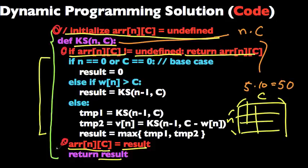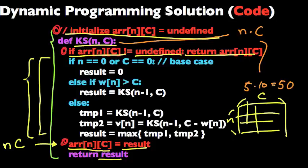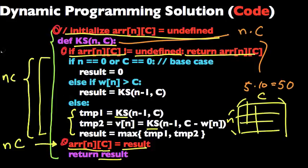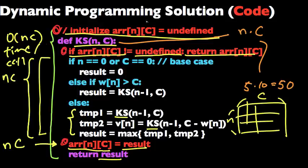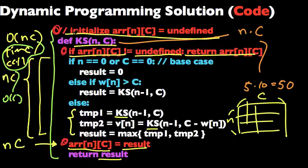What's the runtime for this function? We reach the main computation at most n times c times. Every time we go through this function, the maximum number of recursive calls we make is just two — this one and this one. So the maximum number of times we call this function is about 2nc, or just O(nc). The time per call is constant. So the total runtime is O(nc), which is much much better than the exponential time complexity we had earlier.